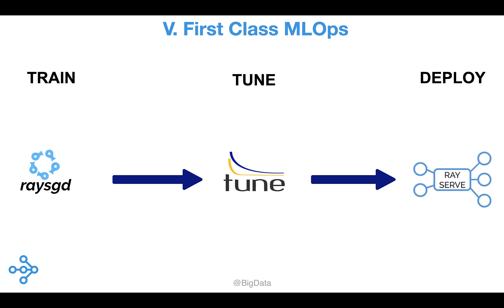To that end, Ray has components that would be useful for companies moving towards CI/CD for machine learning. It already has libraries for key stages of the ML lifecycle: Ray SGD for training, Tune for model tuning, and Serve for model deployment. Hence, Ray will allow your teams to more readily bring CI/CD methods into their ML Ops practice.